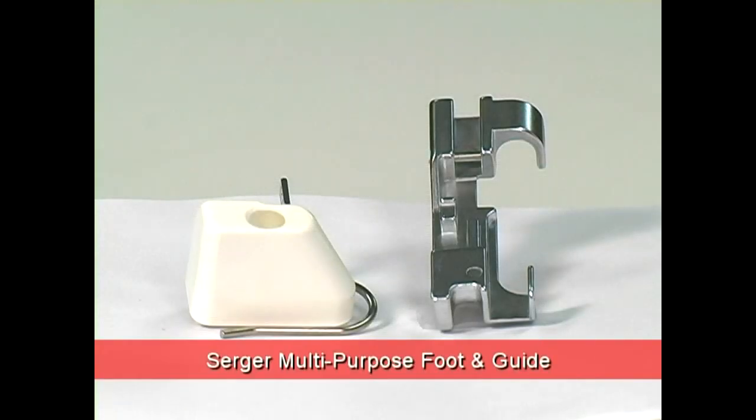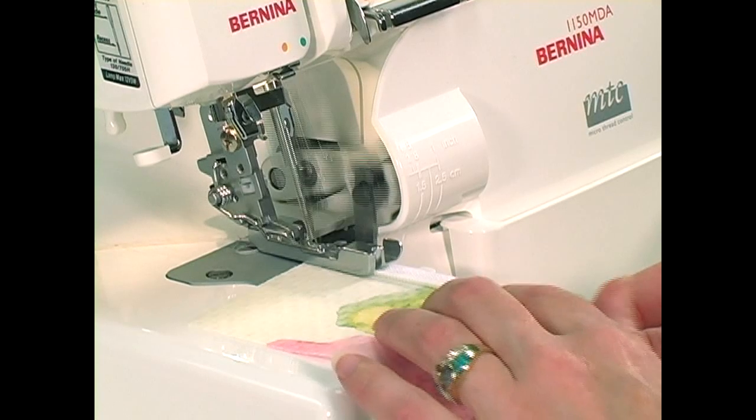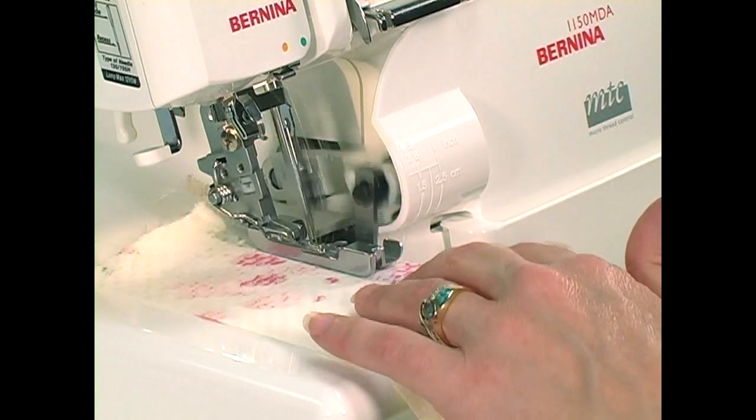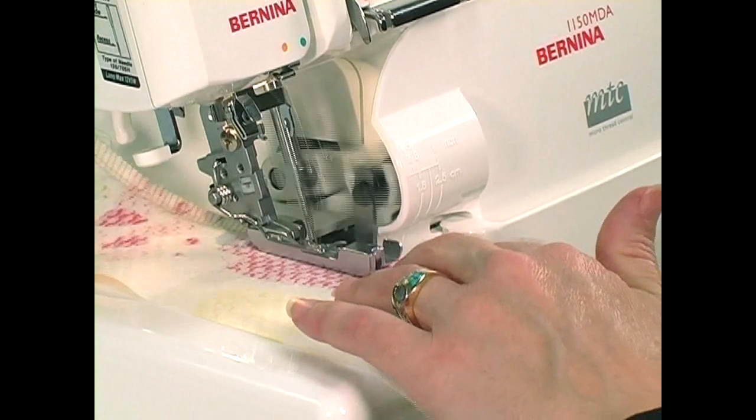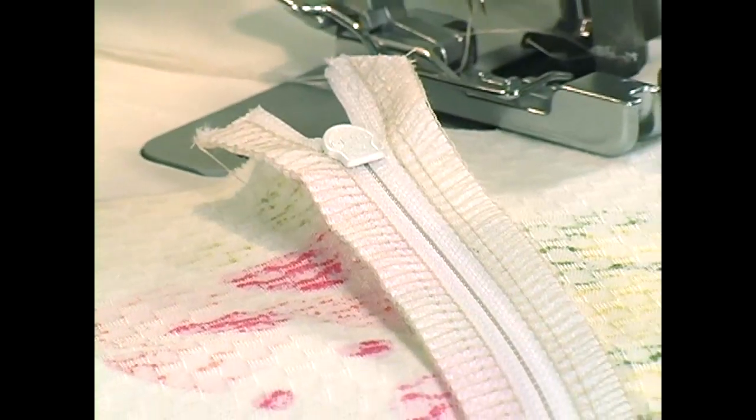The serger multi-purpose foot is designed for a wide variety of tasks. For example, stitching strands of sequins, pearls, and beads as well as making and attaching piping or inserting a zipper. The foot allows for cording to be quickly and easily covered to create custom piping while evenly trimming and overcasting the seam allowances. Piping may even be attached to a layer of fabric as it's covered.